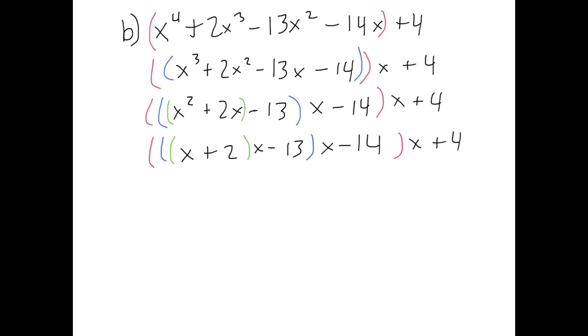Once again, if you did everything correctly, you should have changed the standard polynomial into the nested form of x plus 2, that quantity times x, minus 13, that whole quantity times x, minus 14, again that entire quantity times x, plus 4.